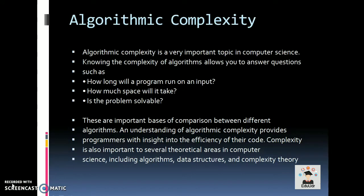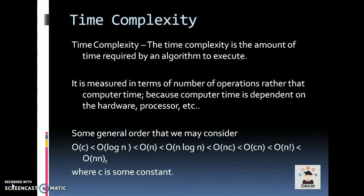Algorithmic Complexity is a very important topic in computer science. Understanding algorithmic complexity provides programmers with insight into the efficiency of their code. Complexity is also important to several theoretical areas in computer science, including algorithms, data structures, and complexity theory.